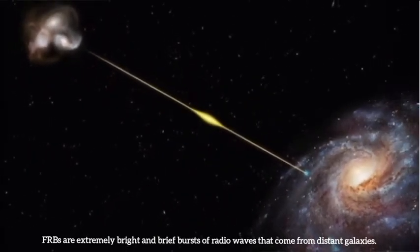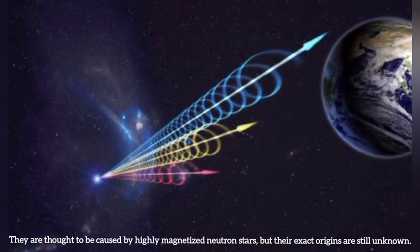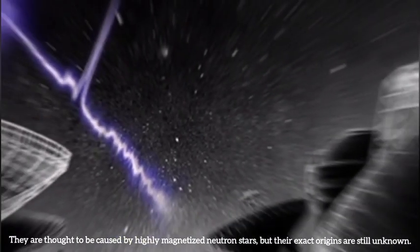FRBs are extremely bright and brief bursts of radio waves that come from distant galaxies. They are thought to be caused by highly magnetized neutron stars, but their exact origins are still unknown.